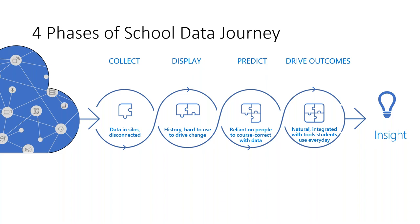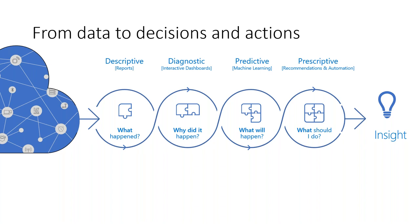A more connected approach looks at what tools are available at each stage to create insight. At the base stage: what happened — what reports do we have, what data are we collecting? The next level is why did it happen — diagnostic, interactive dashboards for ad hoc and continuing analysis. Then what will happen, where machine learning comes into play. Finally, prescriptive guidance on what should I do, including recommendations and even automations.